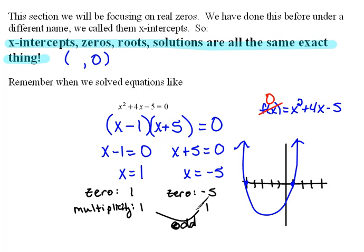Multiplicity is how many times it happens. The zero is the actual x-intercept itself, so we don't want to confuse those two.